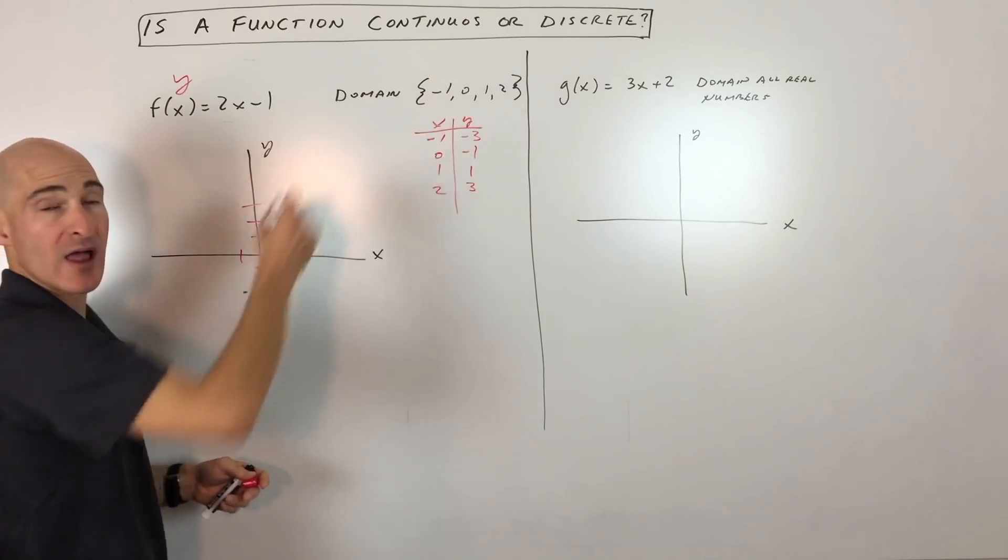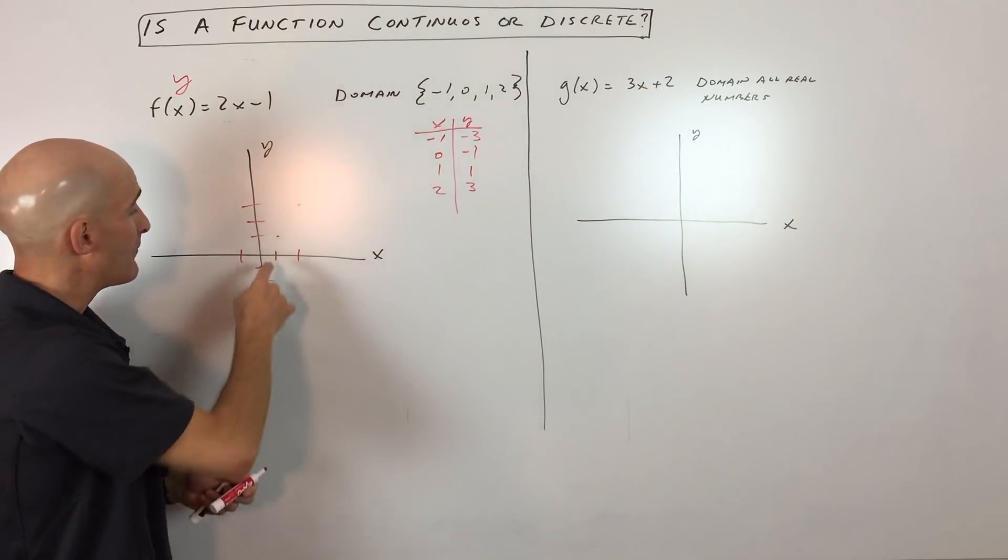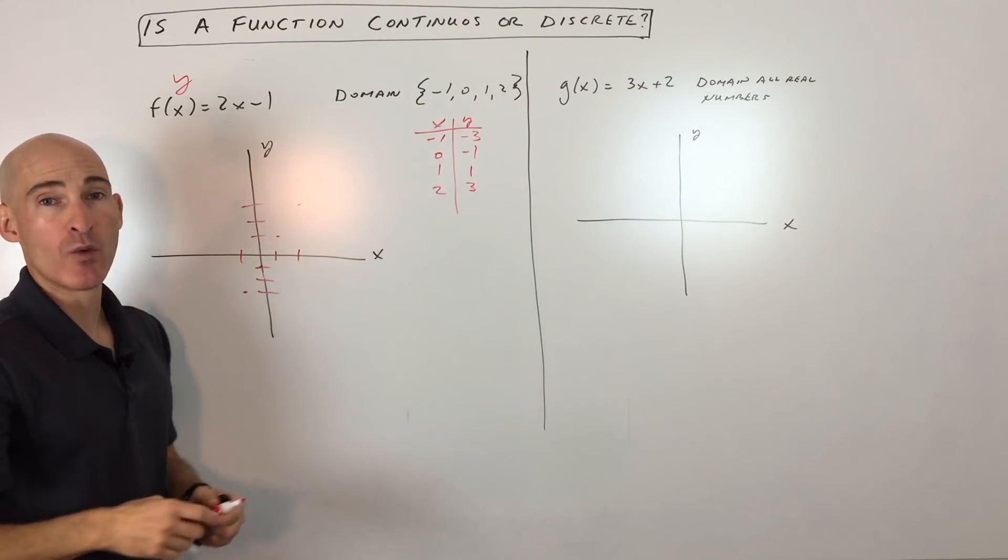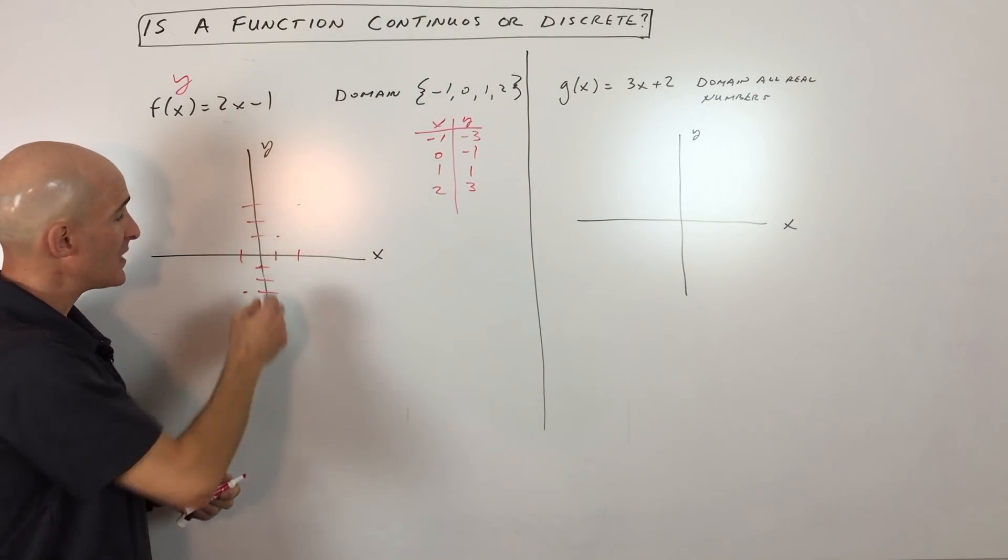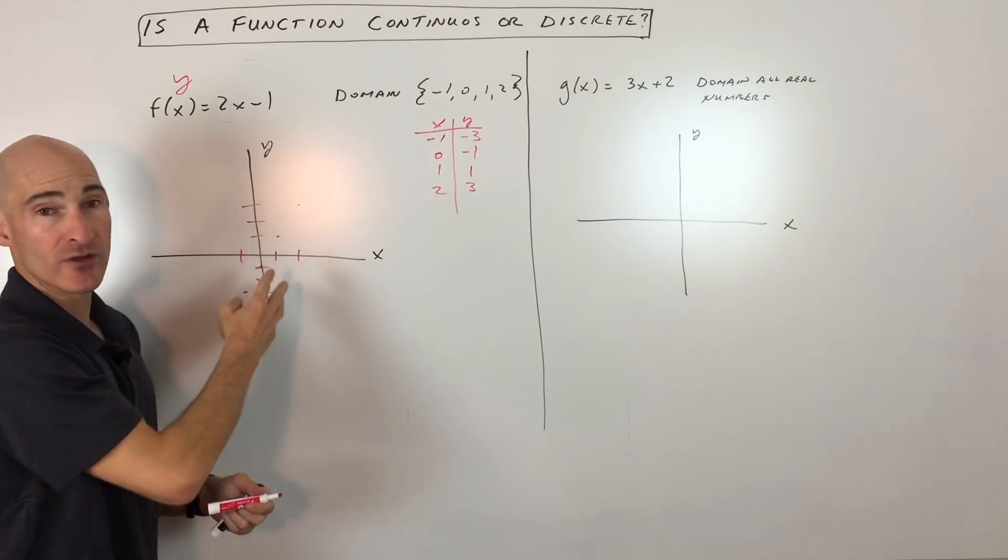Now you don't want to draw a line through these points because that would imply that any point on that line is what we're dealing with in regards to this particular problem. And we don't want to work with those points in between. We're just looking at these individual points. So when x is negative 1, here's our output negative 3, and so forth.